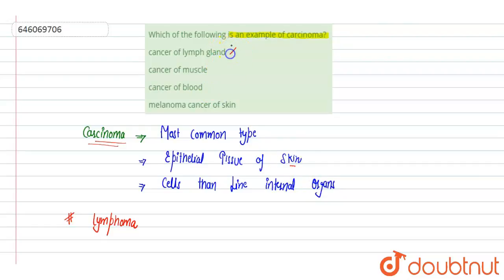Next is cancer of muscle. Any cancer related to muscles, bone, or cartilage comes under sarcoma. So this is also incorrect.